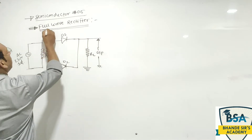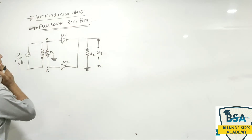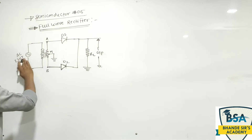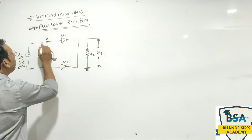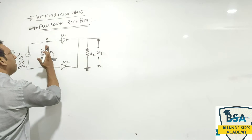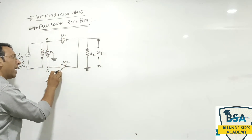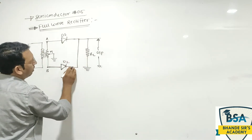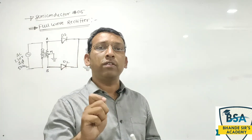Today we are going to understand the Full Wave Rectifier. Full Wave Rectifier को समझने से पहले यह है उसका circuit. AC circuit 230V, single phase 50Hz supply is given to the primary winding of the transformer. Secondary winding of transformer is connected to diode D1 and diode D2, and output is taken across load resistance RL.